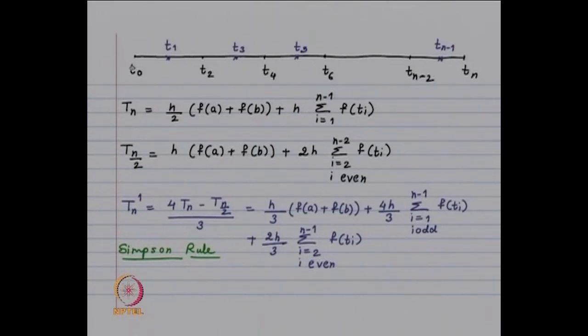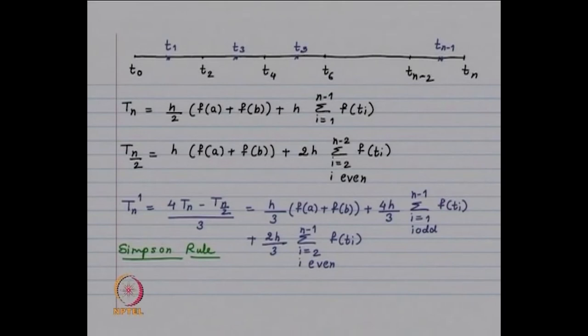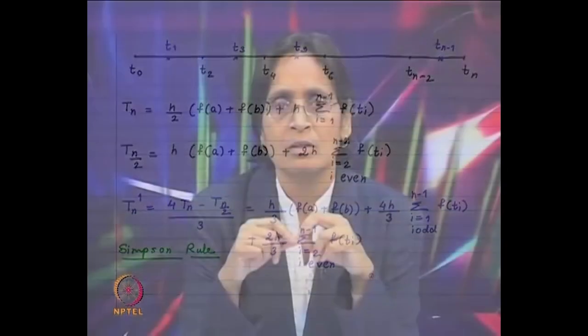Our partition is t₀, t₂, t₄, …, tₙ, and t₁, t₃, t₅ are the midpoints of the intervals. If you look at the composite Simpson rule associated with the partition t₀, t₂, t₄, …, it is nothing but this expression. Thus we have shown that the first step of Romberg integration gives us the composite Simpson rule.